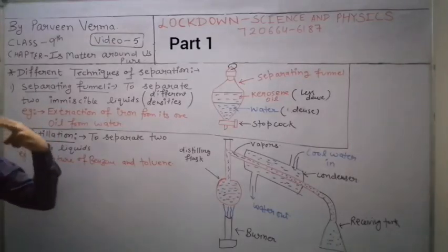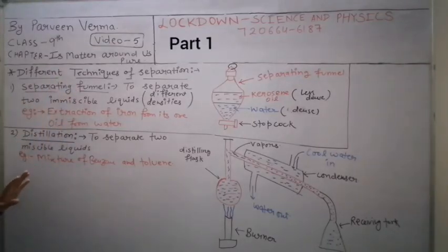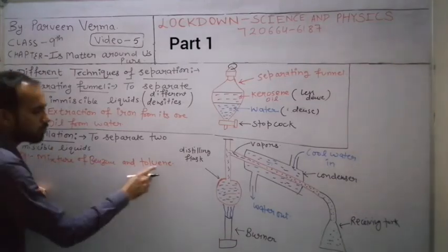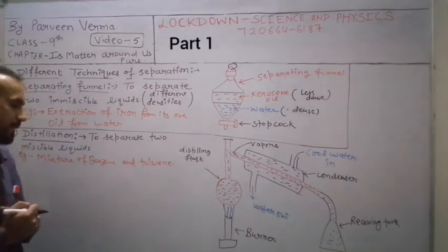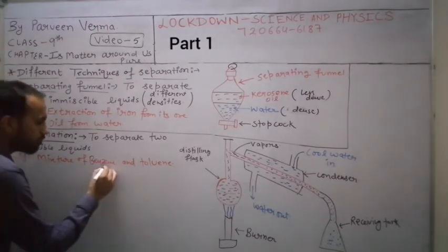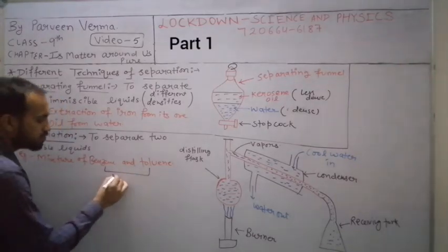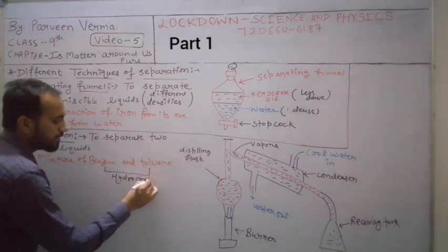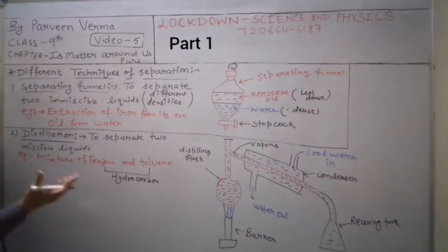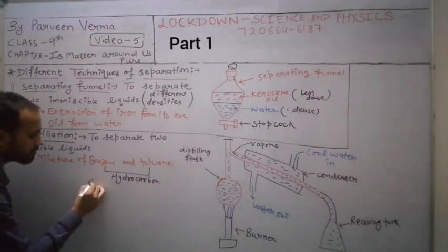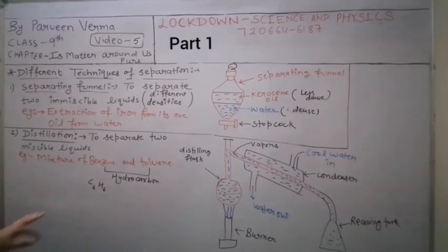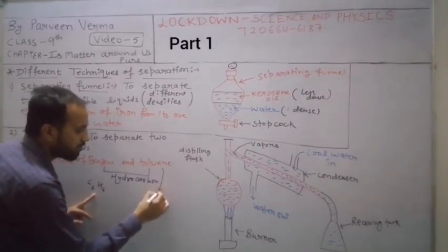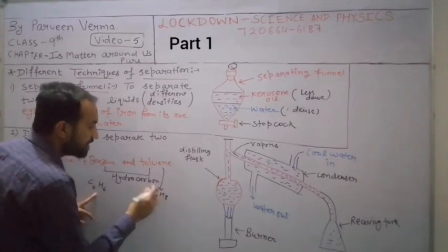If two miscible liquids need to be separated, we use distillation. But if two immiscible liquids need separation, we use a separating funnel. An example of distillation is separating benzene and toluene. Both benzene and toluene are hydrocarbons - meaning they are made of hydrogen and carbon. Benzene's formula is C6H6.